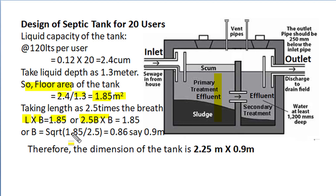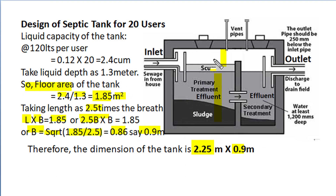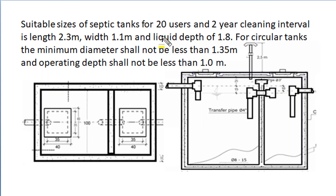Taking the square root, we find breadth as 0.86 metres, say 0.9 metres, and 2.5 times that gives the length. So the surface dimensions of the septic tank would be breadth 0.9 metres and length 2.25 metres. If we consider a freeboard depth of 40 cm and liquid depth of 1.3 metres, then the total depth of the septic tank will become 1.7 metres. Thus for a septic tank for 20 users with 2 years cleaning interval, the suitable size is: length 2.3 metres, width 1.1 metres, and liquid depth 1.8 metres.